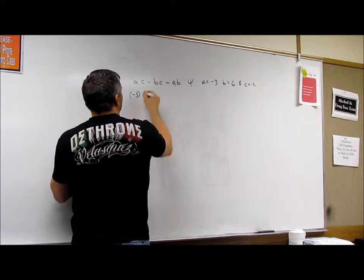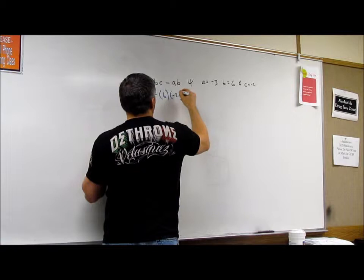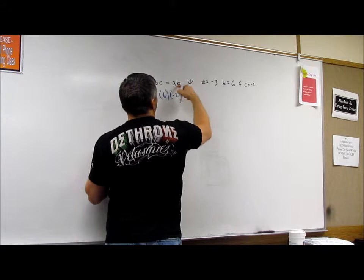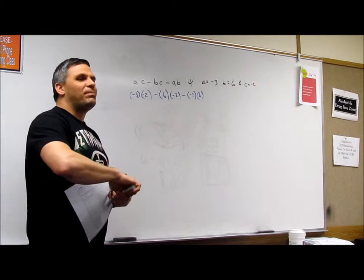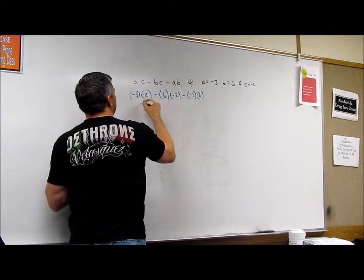So in this case, A is negative 3. C is negative 2. B is 6. C is negative 2. Minus A is negative 3. And B is 6 again. So, it's just a point of plugging in the numbers, right? And then, good. Now, it's just the same as we've always done. Doing the math.